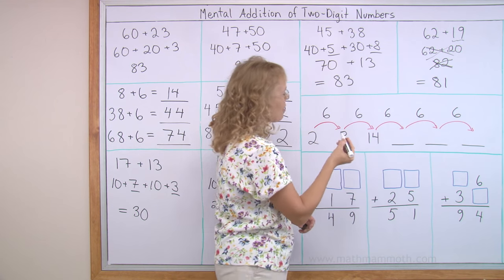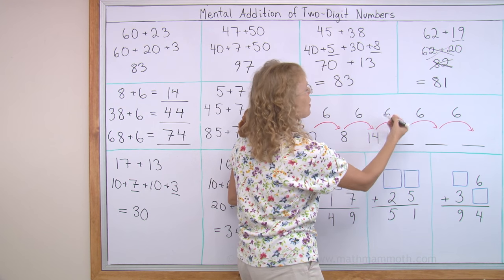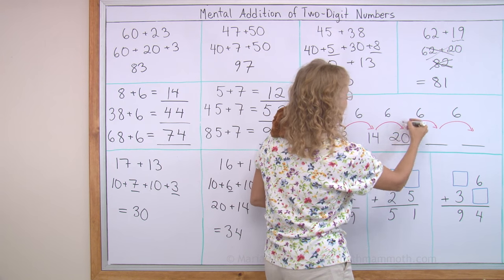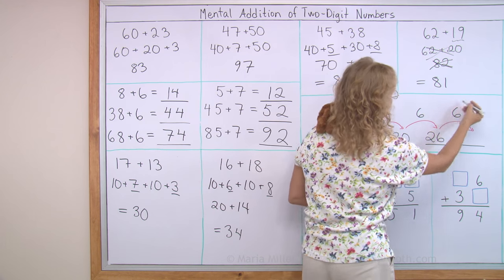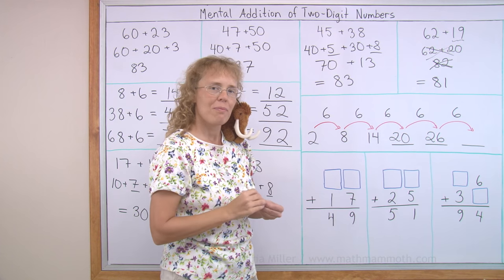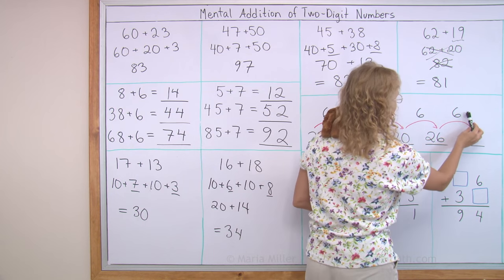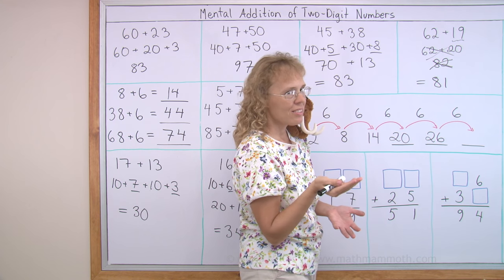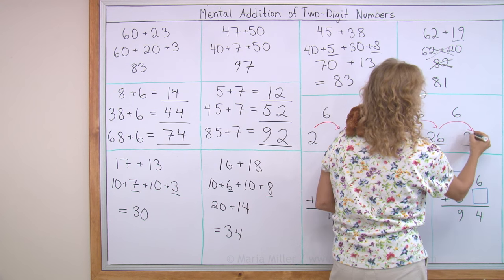And now we're going to fill in the pattern. 14 plus 6. That would be 20. 20 and 6. Now that's easy, 26. 26 and 6. You can use one of the strategies in this lesson. Add 6 and 6. That's 12. 2 more than 10. So this will be 2 more than the next 10, 32.